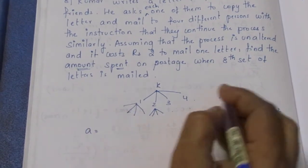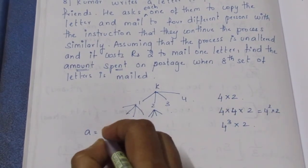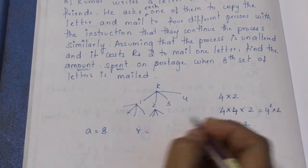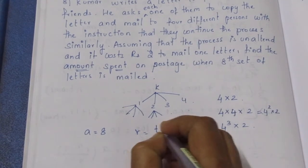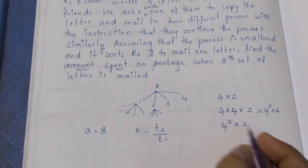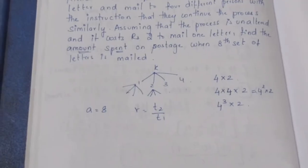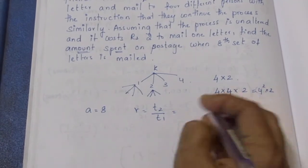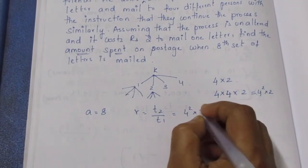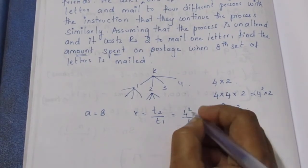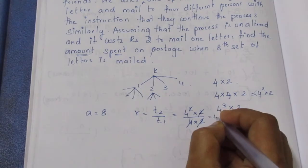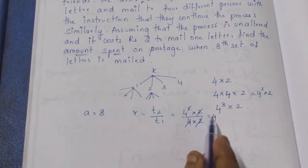A is 8. R is T2 by T1. That is 4 square into 2 by 4 into 2. 2 cancels. 1 four, 1 four cancel. Balance is 4. So R is 4.